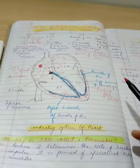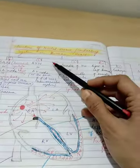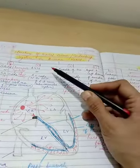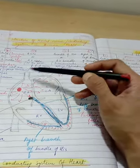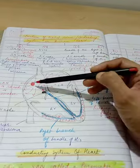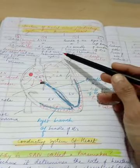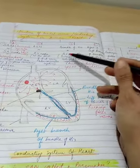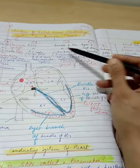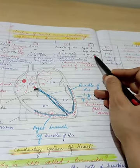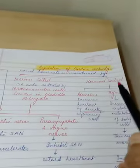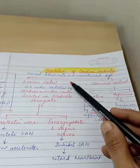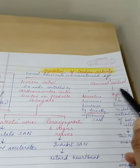After that we discussed about the structure of nodal tissue or the conducting system in a human heart where we discussed especially the pacemaker, the activities of various other participants into the system like AVN, the bundle of His, the right and left branches and the Purkinje fibers. After this we stopped our class yesterday on this topic at regulation of cardiac activity.